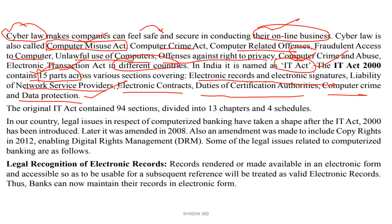The original IT Act contained 94 sections, further divided into 13 chapters and four schedules. This is very very important and has already been asked. You have to remember that the original IT Act contained 94 sections divided into 13 chapters and four schedules.